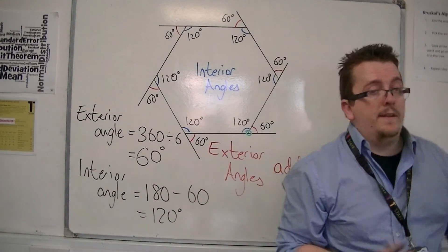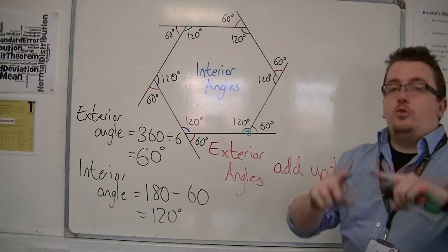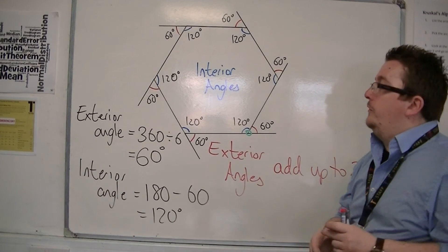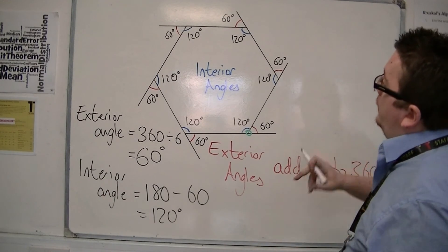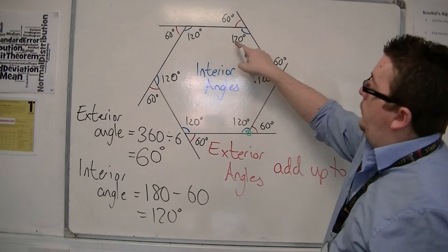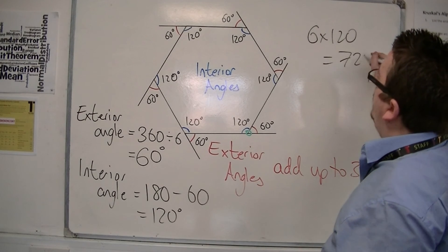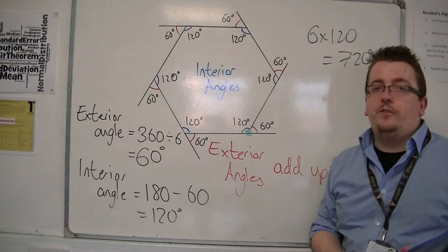Now, beforehand, in the previous video, when we looked at the hexagon and the actual total of all the interior angles, we found that they added up to 720 degrees. So 6 lots of 120, well, that is equal to 720 degrees, as expected.